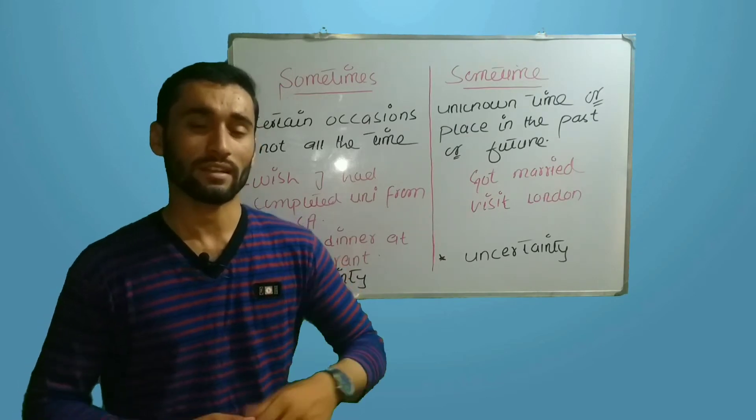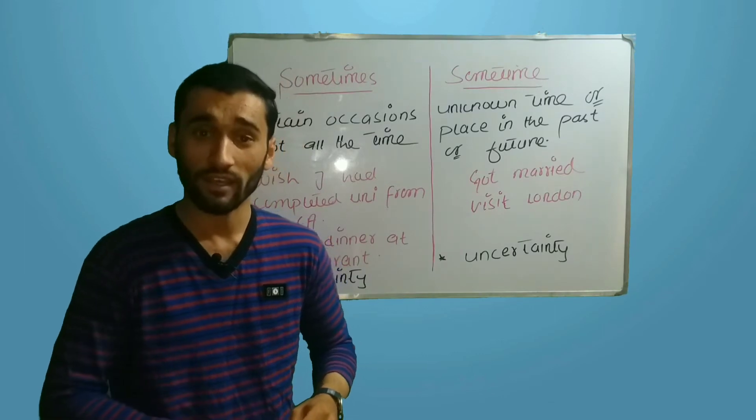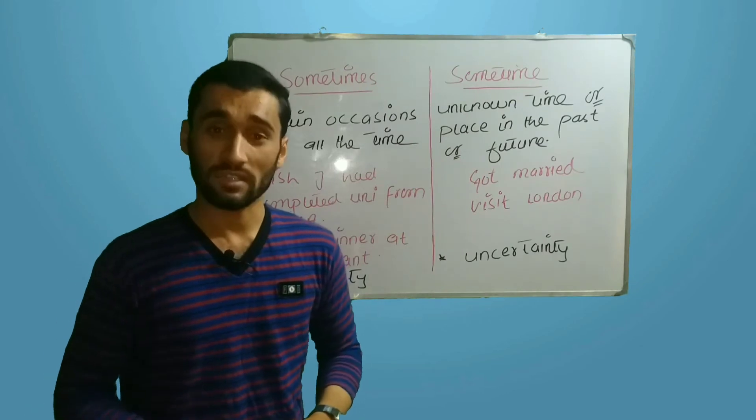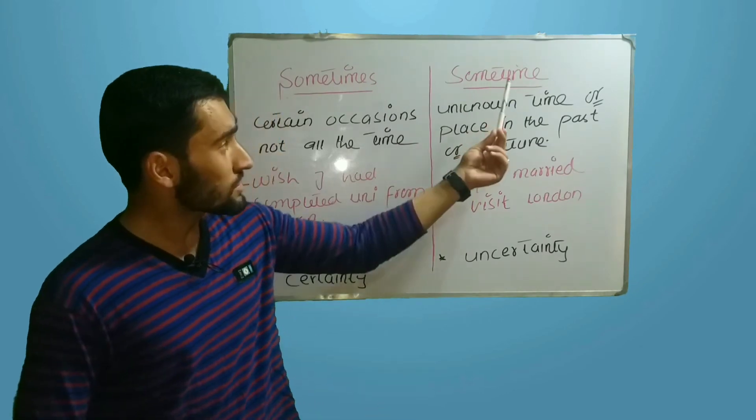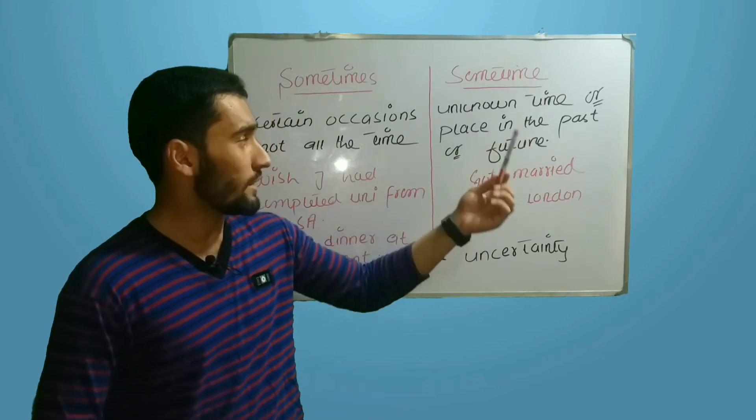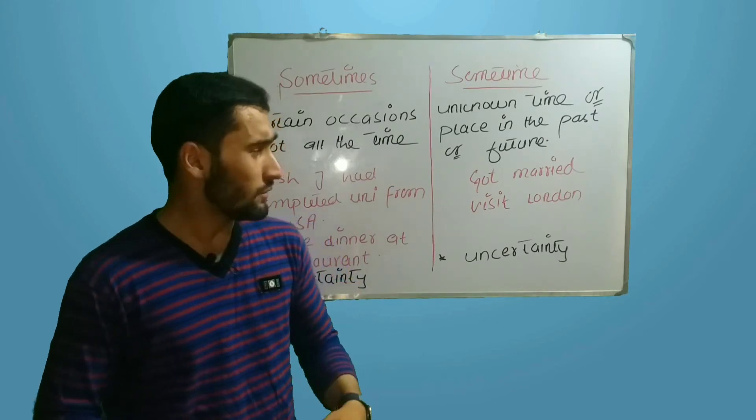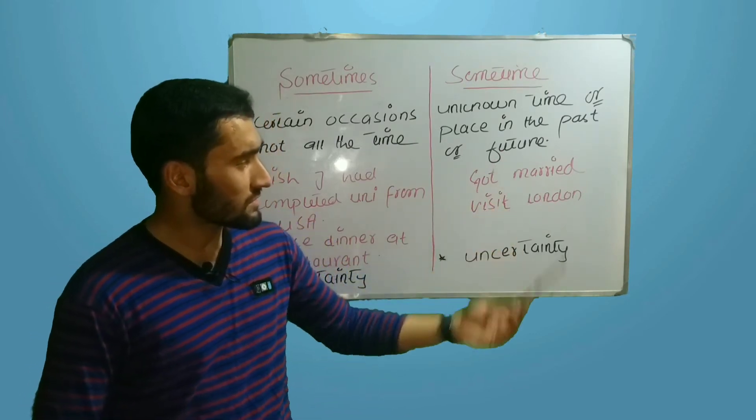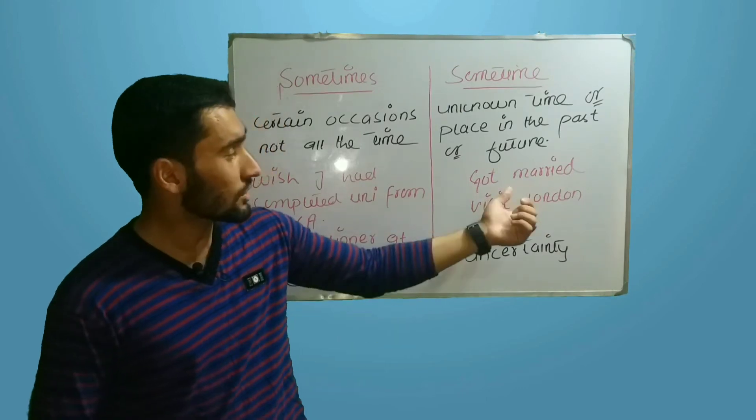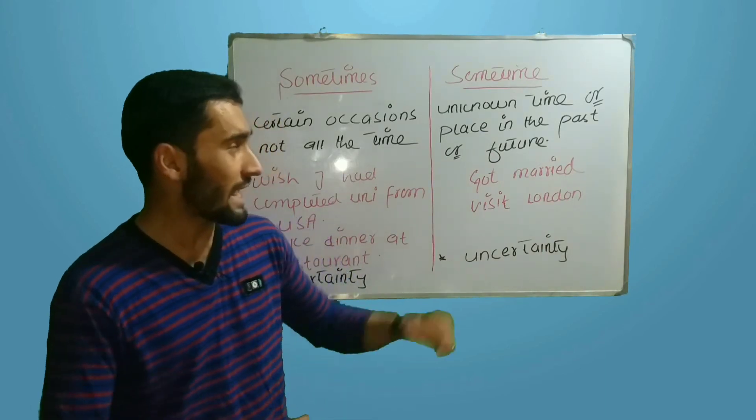Now let's contrast 'sometimes' with 'sometime.' It shows when something happens in an unknown time or place in the past or future. For example, somebody tells me 'Jen got married.'